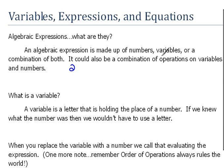Or we could be looking at variables. So another example of an algebraic expression would be x. Or a combination of both. It could be 2x. It could also be a combination of operations on variables and numbers. It could be something like 2x plus 5. All four of these are considered algebraic expressions.